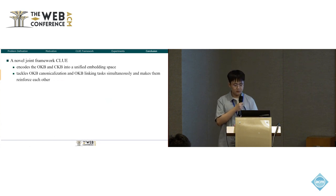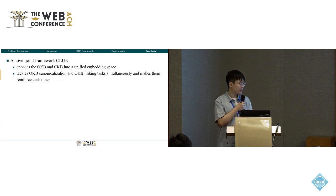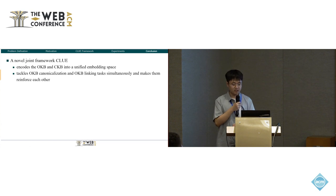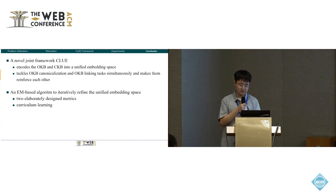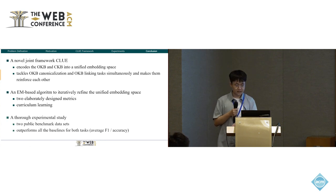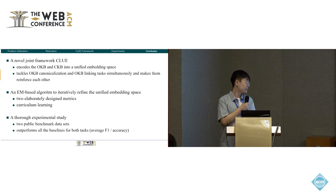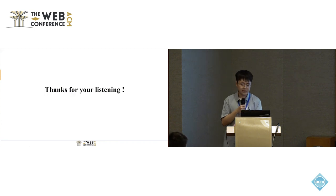In conclusion, in this paper we propose a novel joint framework that encodes the OKB and the CKB into a unified embedding space to tackle OKB canonicalization and OKB linking tasks simultaneously and make them reinforce each other. To further improve the performance of both tasks, we designed an EM-based algorithm to iteratively refine the unified embedding space with two elaborately designed metrics and curriculum learning. A thorough experimental study over two benchmark datasets shows that our framework outperforms all the baselines for both tasks in terms of average F1 and accuracy. Thank you.